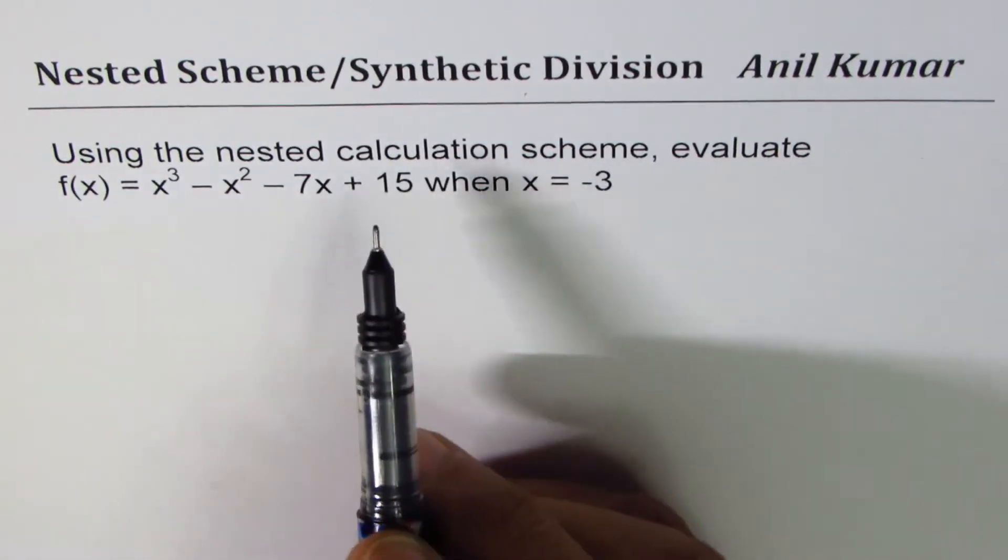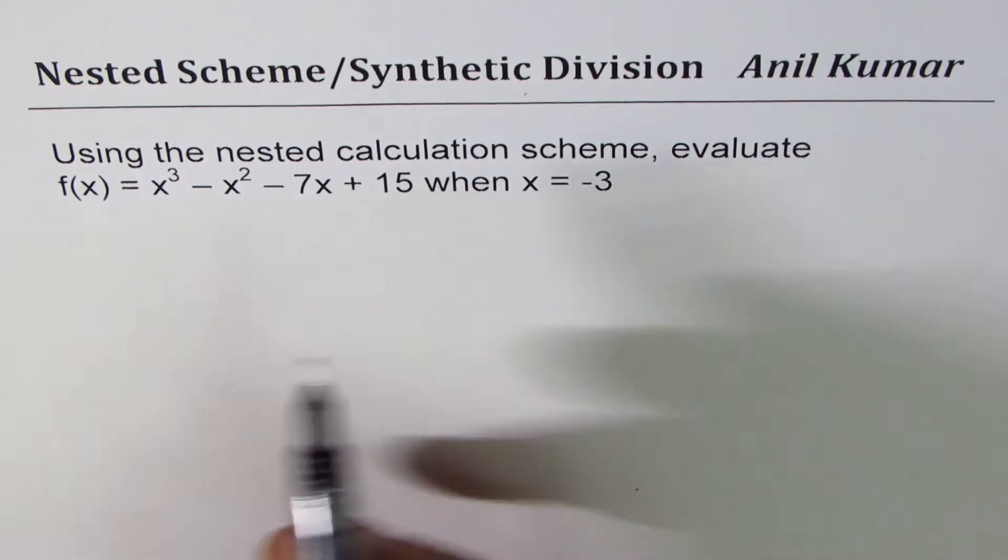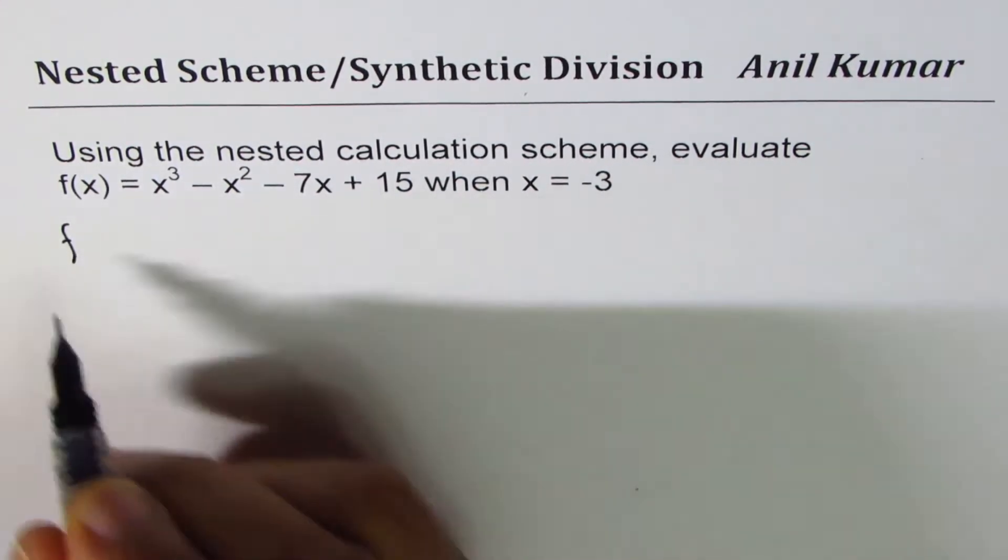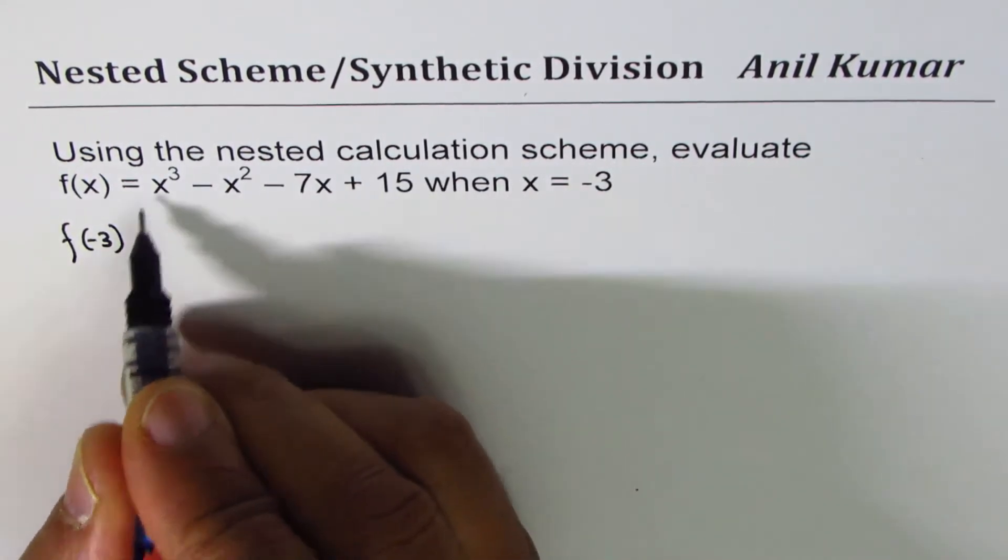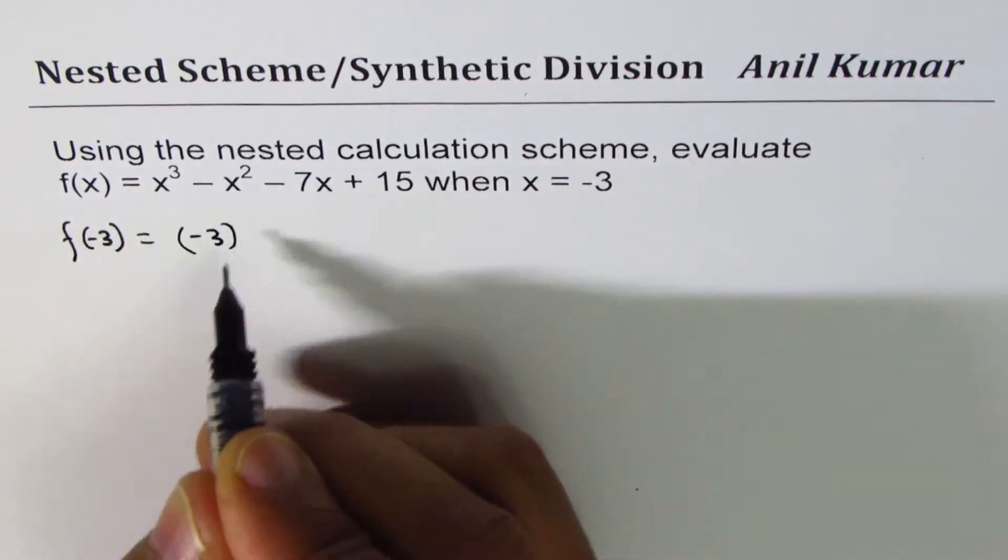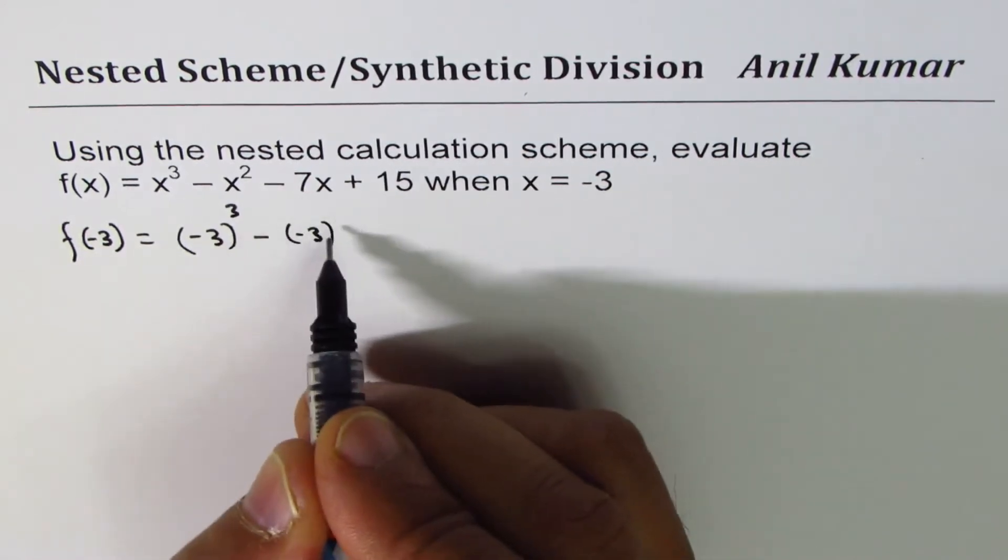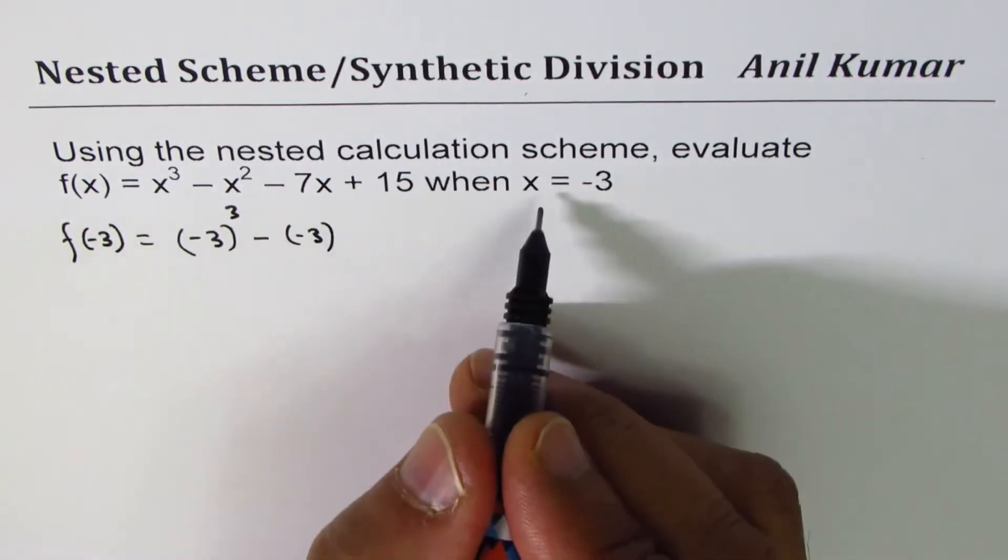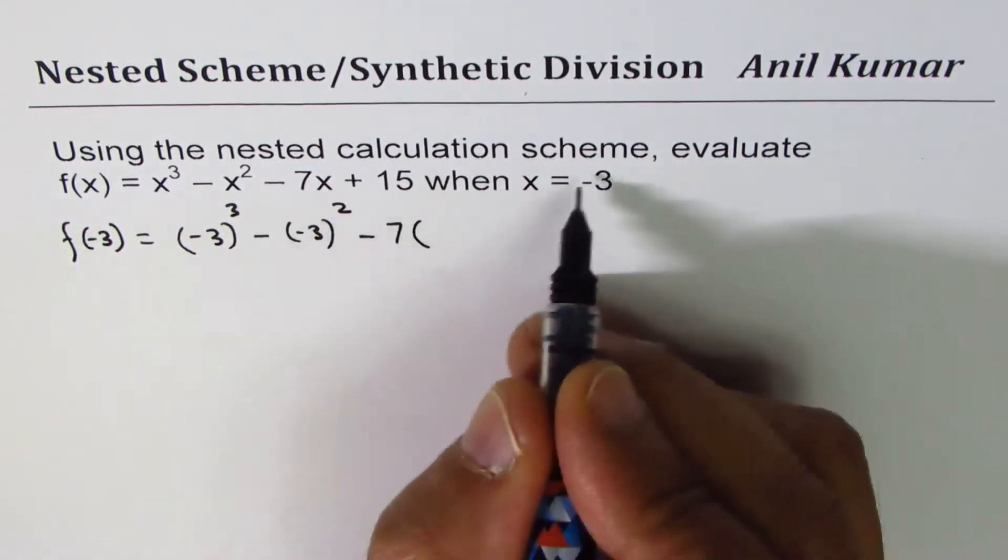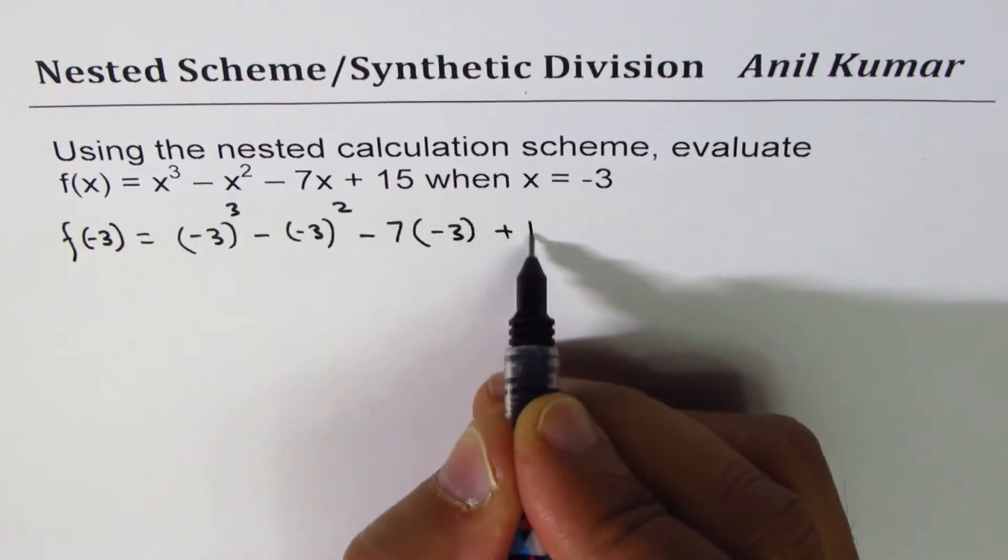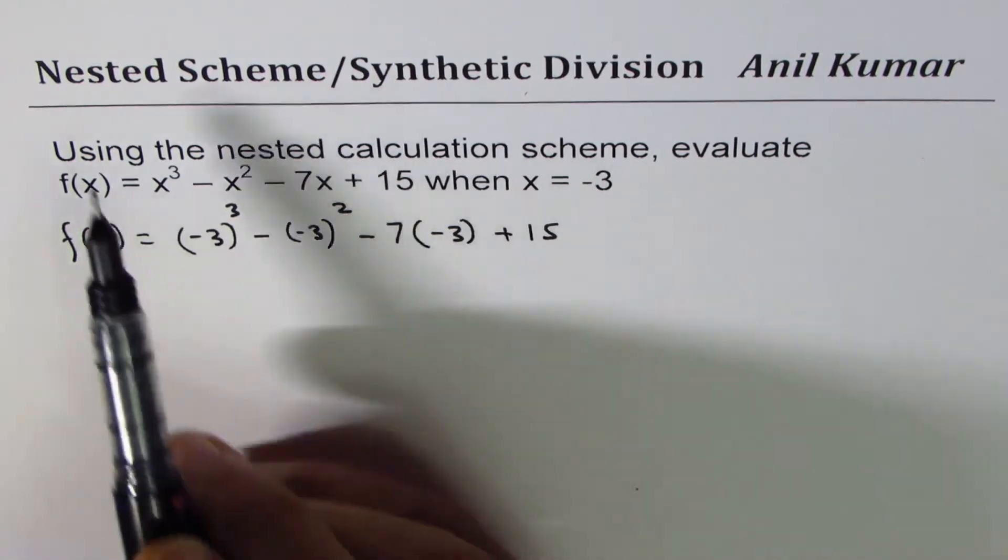Now to evaluate the function's value at a given value of x, we normally replace x with that value. So f(-3) will give us the value - we replace x with -3 and then find the value of the function, the y value for the given value of x.